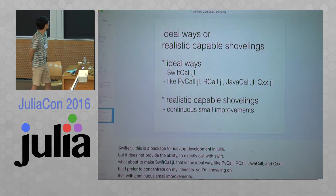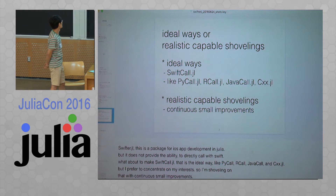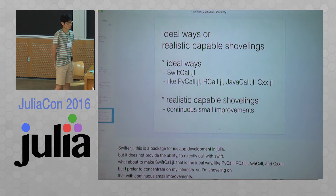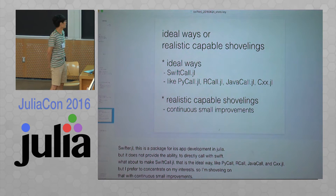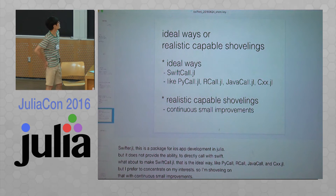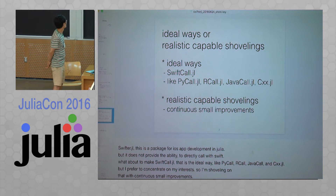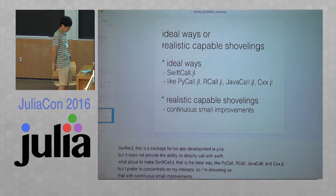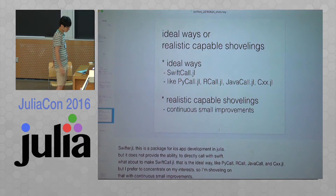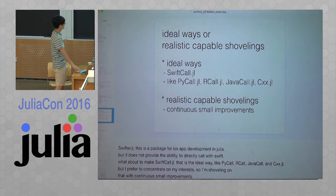Swift.jl is a package for ISF development in Julia, but it does not provide the ability to directly call Swift. What about making a Swift.jl? There are other approaches like PyCore and CXS.jl, but I prefer to concentrate on my own interest, so I'm working on it with continuous small improvements.